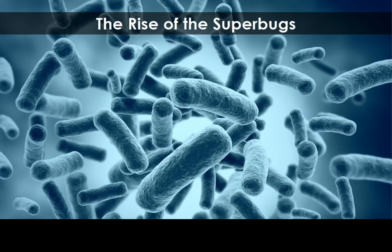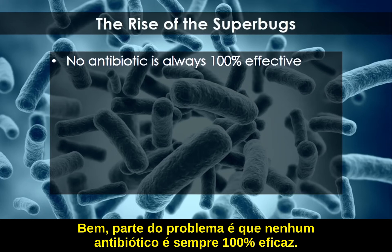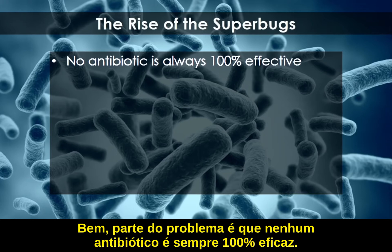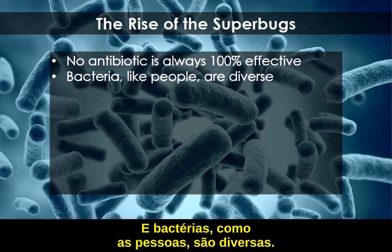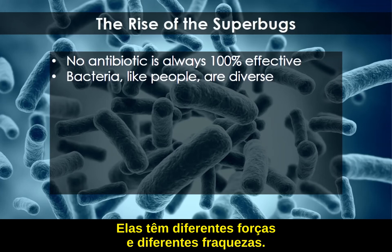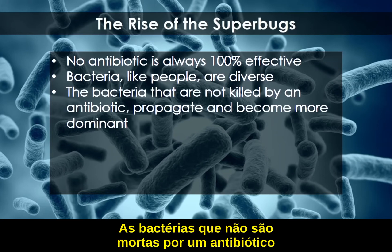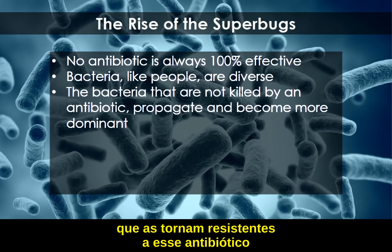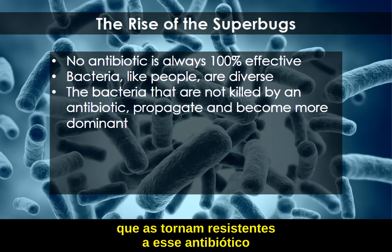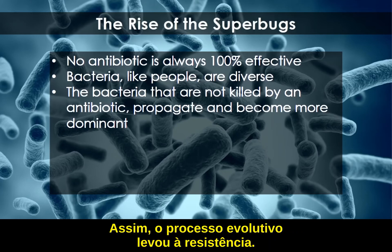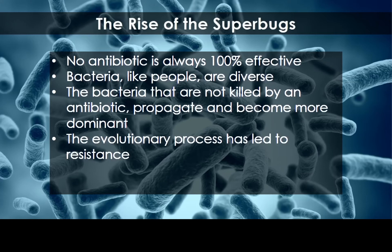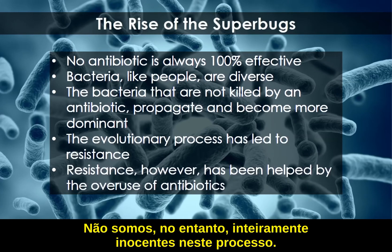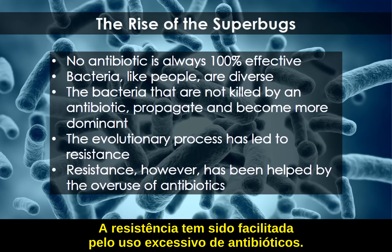Part of the problem is that no antibiotic is always 100 percent effective, and bacteria, like people, are diverse — they have different strengths and different weaknesses. The bacteria which are not killed by an antibiotic, which happen to have certain characteristics making them strong against that antibiotic, propagate and survive and become more dominant. So the evolutionary process has led to resistance.